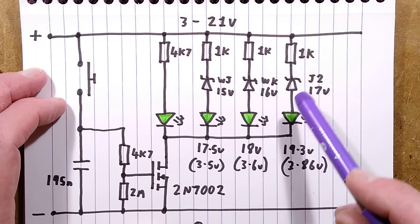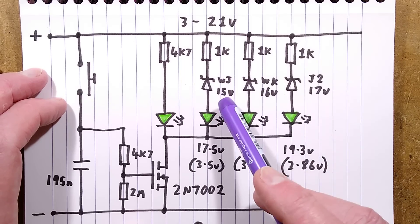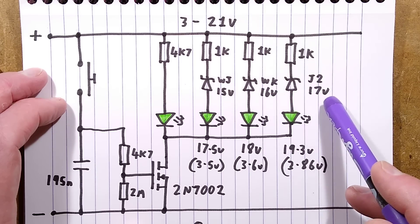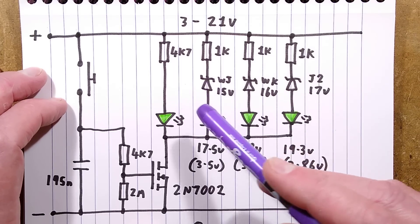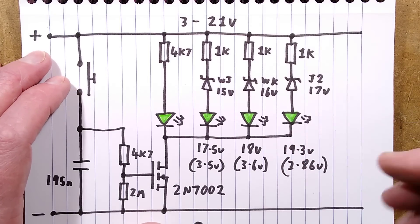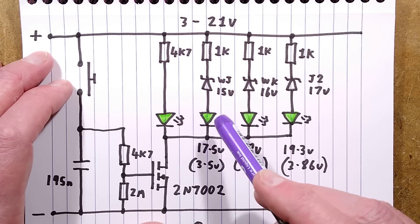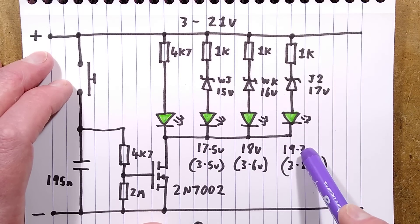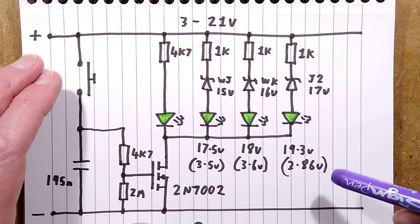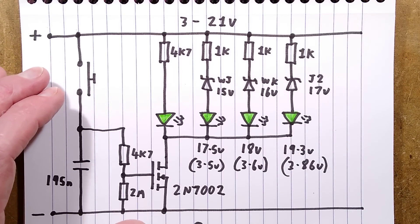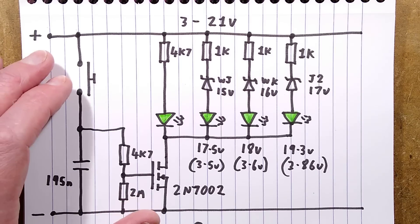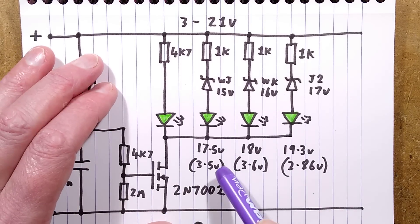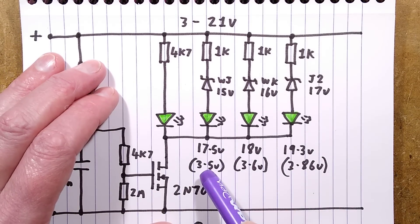The others have the zener diodes with WJ 15 volt, WK 16 volt, J2 17 volt. When I gradually turned the bench supply up on this, the LEDs started glowing at 17.5 volts, 18 volts, and 19.3 volts. Now keep in mind that the fully charged battery pack is 21 volts and a fully discharged would be about 15 volts, so this doesn't, it's not super duper accurate.